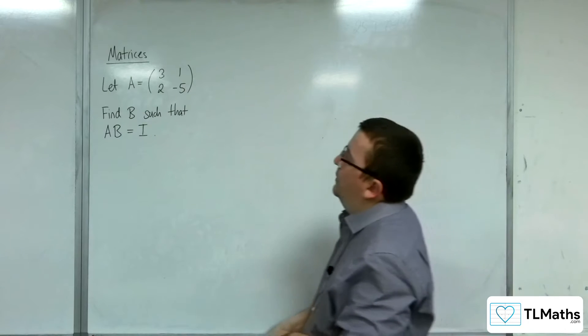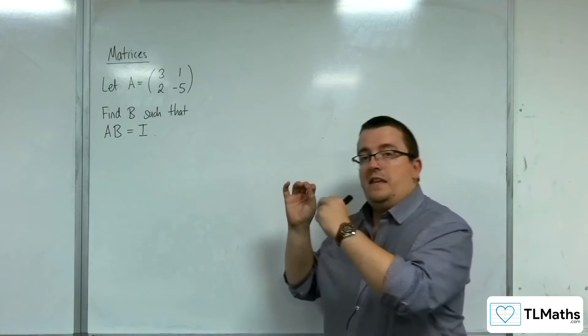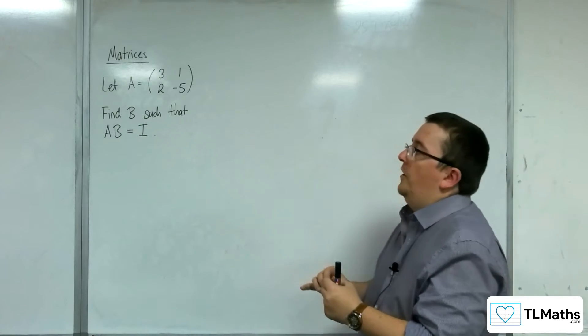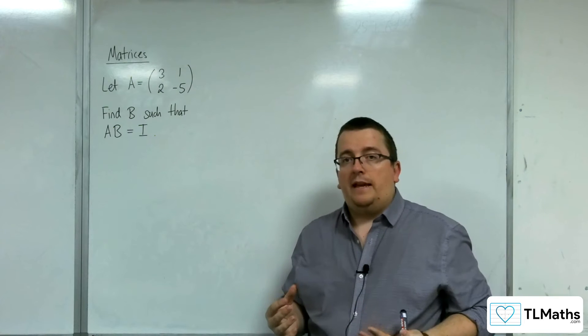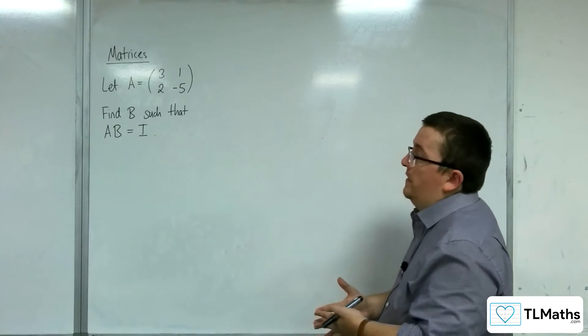Let A be this 2 by 2 matrix, 3, 1, 2, minus 5. And we need to find the matrix B such that A times B is equal to the identity matrix, so represented here by the letter I.